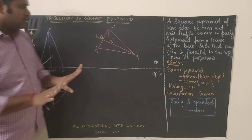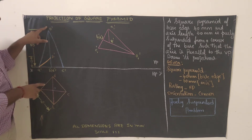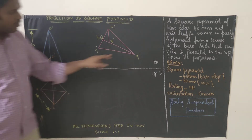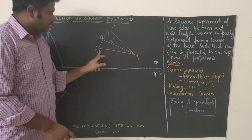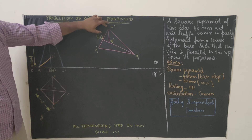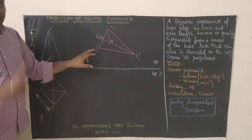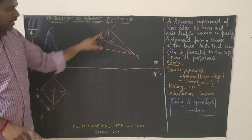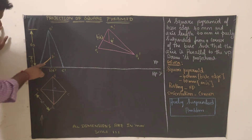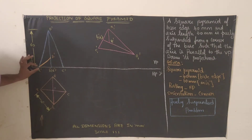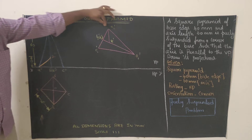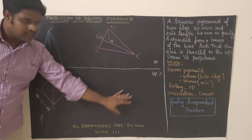Next, measure O-dash to C-dash with your compass; from O1-dash cut an arc. Then measure A-dash to C-dash; from A1-dash cut another arc. Where these two arcs intersect is C1-dash. We have now reconstructed the triangle. This is the freely suspended position — the pyramid is being hung from its corner, flipped upside down. Measure A-dash to B-dash and mark B1-dash from A1-dash, joining through the center of gravity toward O-dash.